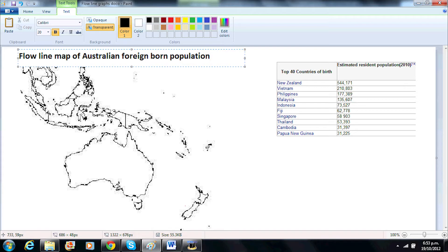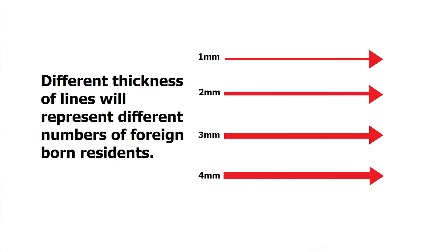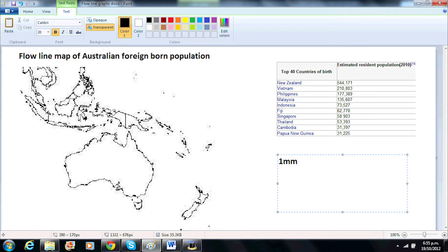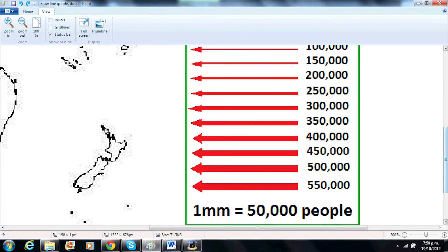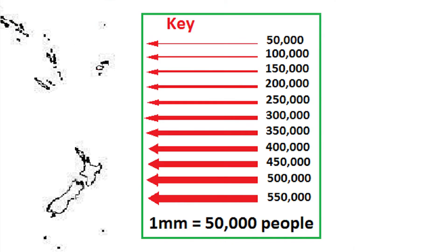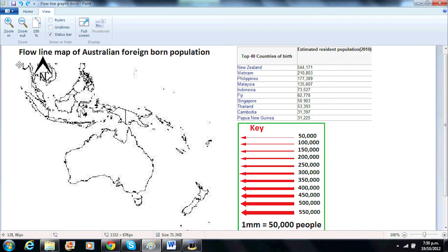Now we will have to decide what numbers of foreign-born residents are represented by the different thickness of the lines. In this case, I will make one millimeter of thickness represent 50,000 people. Then we can make a key which I have ranging from 50,000 to 550,000 people and a north point.